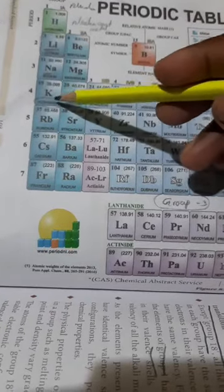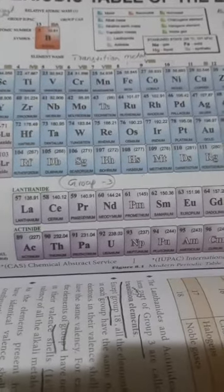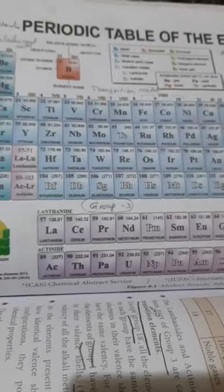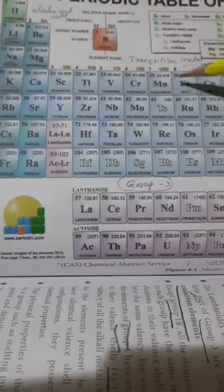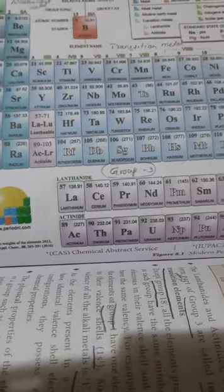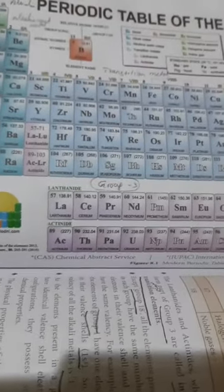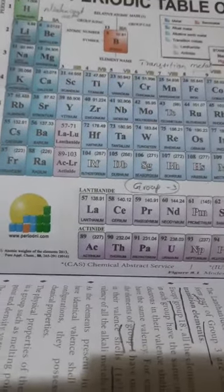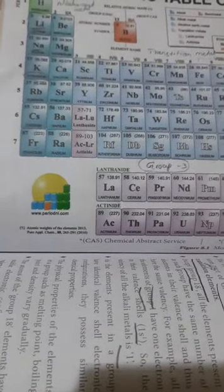The 4th period goes from potassium to krypton. How many elements are there? — 1, 2, 3, 4, 5, 6, 7, 8, 9... 13, 14, 15, 16, 17, 18. There are 18 elements in the 4th period. The 5th period goes from rubidium to xenon, which includes 18 groups.